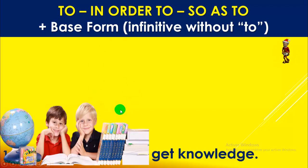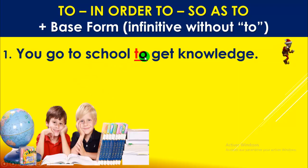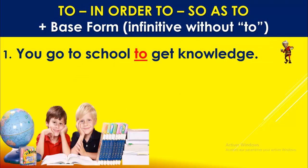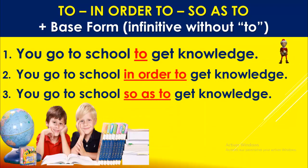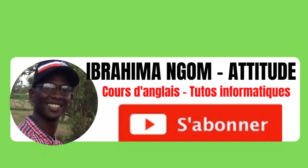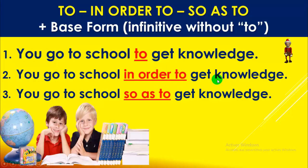Example: you go to school to get knowledge. 'To get knowledge' — tu vas à l'école pour obtenir le savoir. Number two: you go to school in order to get knowledge. Number three: you go to school so as to get knowledge. These three sentences express purpose. 'To' + base form, 'in order to' + base form, 'so as to' + base form.